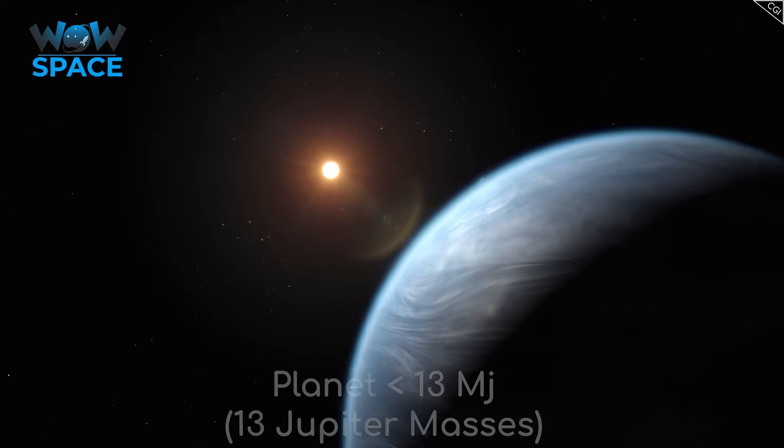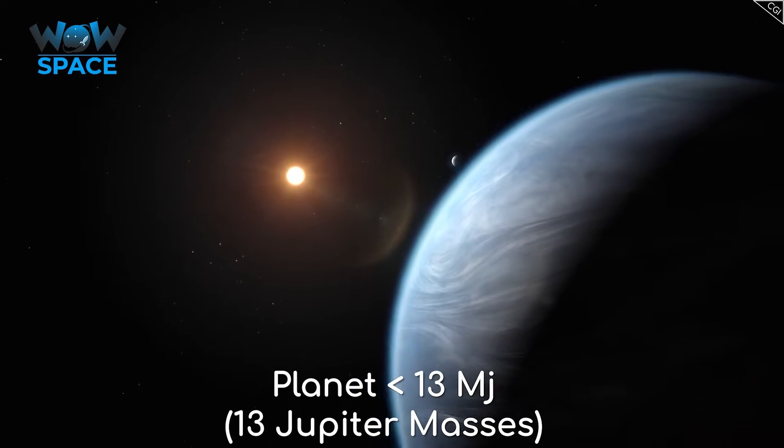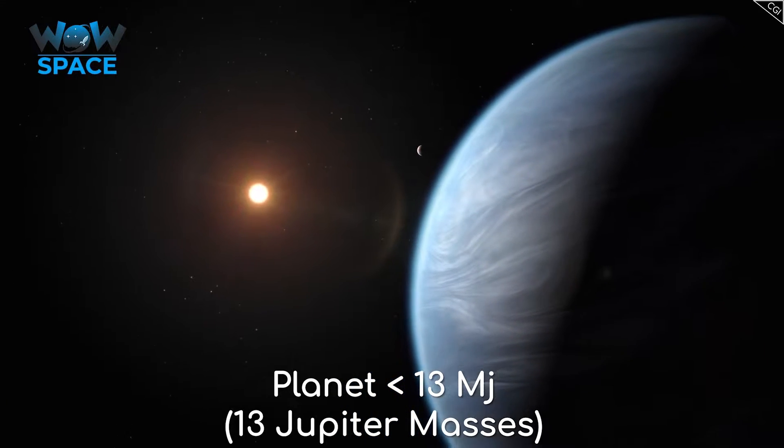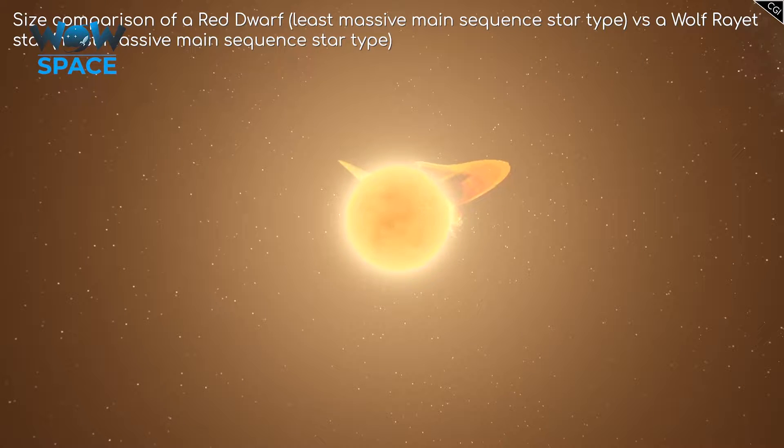Lower masses than brown dwarfs are simply planets, asteroids, and dust. So, the minimum mass of a star is 0.08 solar masses.